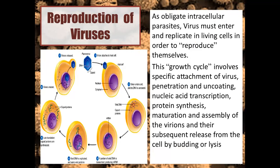Viruses cannot multiply by binary fission — they have a special type of reproduction. They are obligate intracellular parasites that use the cellular metabolic system. The viral growth cycle starts with attachment of virus to the cell surface, then penetration, loss of the protein shell, synthesis of viral DNA or RNA and viral proteins, maturation, assembly of new virions, and release from the cell.